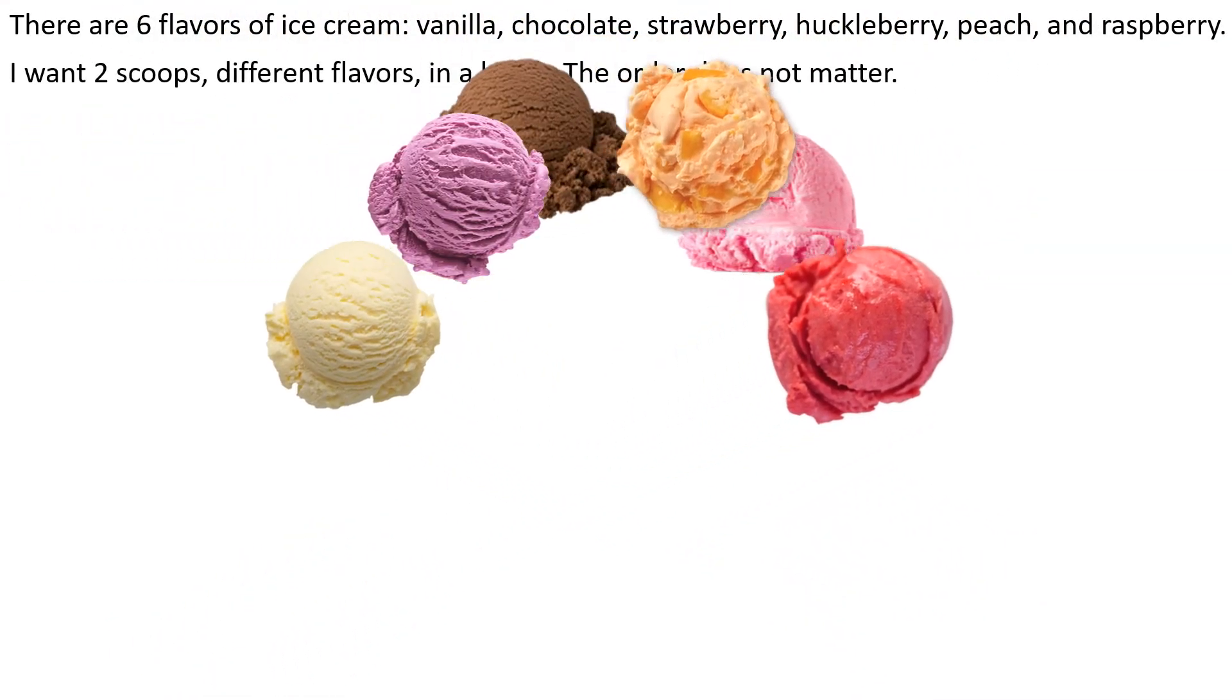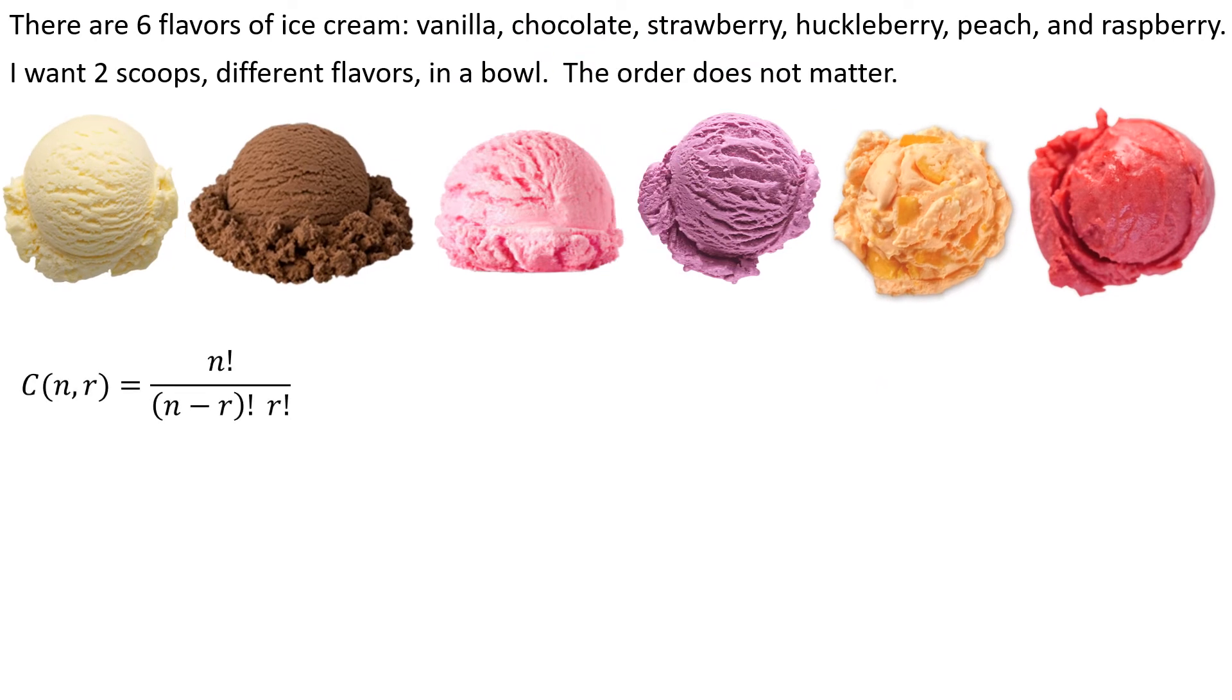Okay, so let's do an example where there are 6 flavors and I want 2 scoops. Order does not matter. All right. Okay, so this is going to be a combination because the order does not matter.